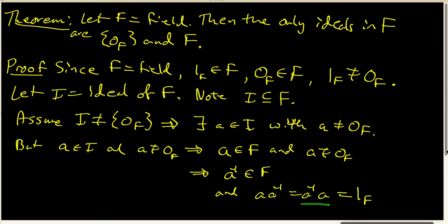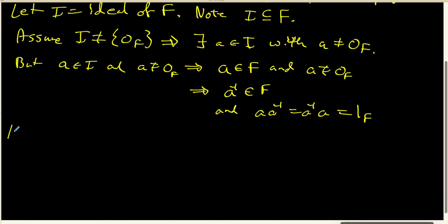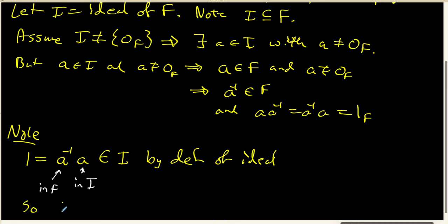So I want to look at it this way. We're going to make the following note. We know that 1 is equal to A inverse times A. And I also know that this A is inside the ideal I, and that A inverse is inside the field F. So the definition of ideal places that product inside the ideal. So what I know now is that 1 definitely belongs to my ideal.